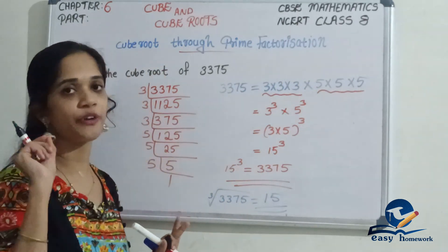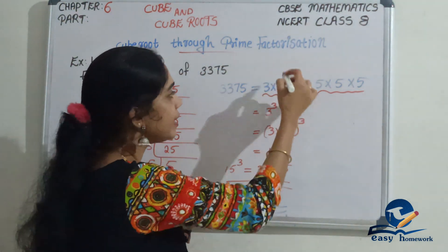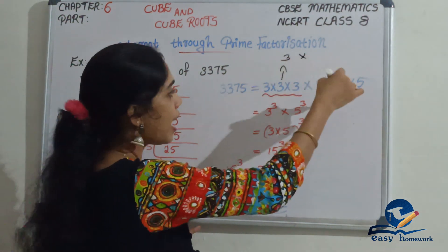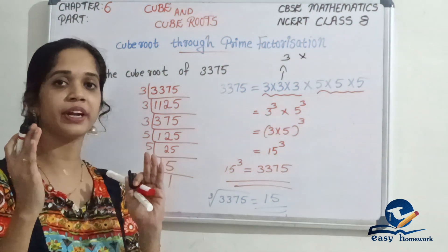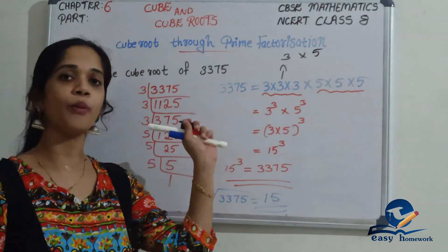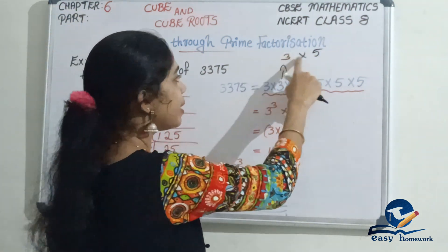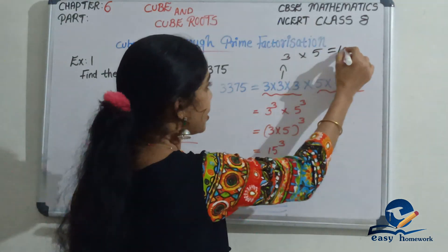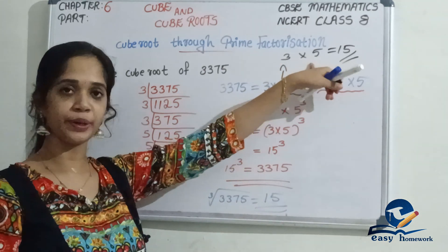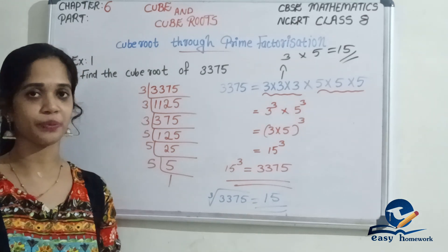To summarize: if you add one factor from each triplet pair — grouping three factors together — you take one factor out from each group of three. So if you have three triplet groups, you take one factor from each and multiply them together to get the cube root answer.